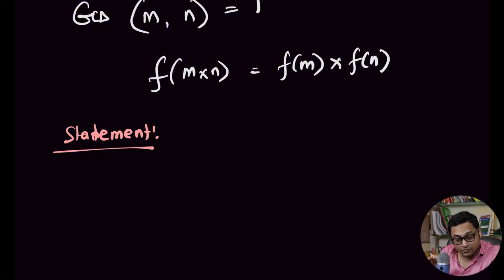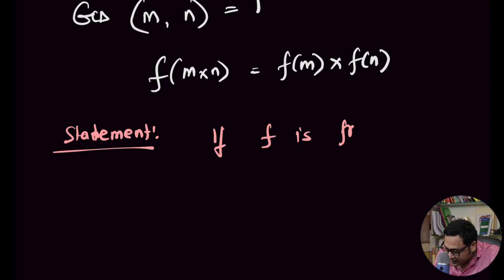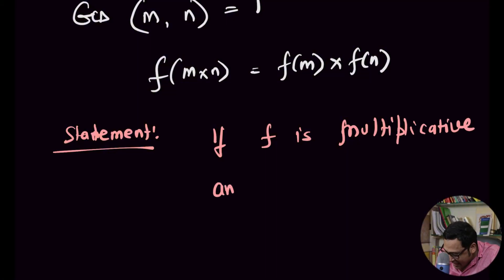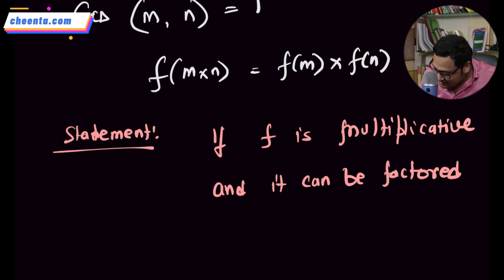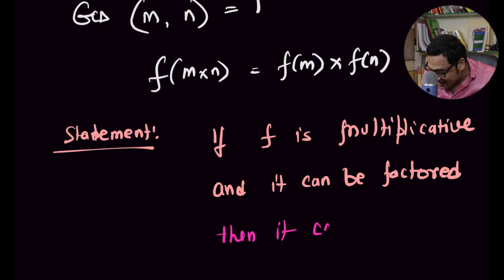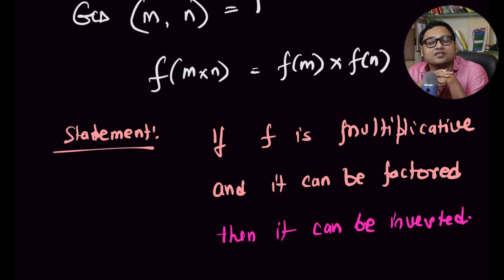Now here is a very interesting statement. If f is a multiplicative function and it can be factored — meaning it can be written as a sum of some other functions — then it can be inverted. That is the beauty of Möbius inversion. If a multiplicative function can be factored, it can also be inverted. We are very close to the core idea.